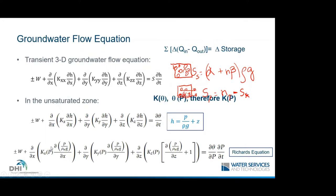Because K varies with pressure, the coefficient in the equation changes with the unknown, making the equation nonlinear. What remains after substitution is a pressure-dependent variable. This is called Richards' equation in three dimensions. To solve it, we need two functions: how hydraulic conductivity K varies with pressure, and how saturation θ varies with pressure. These are called constitutive relationships or parametric functions.